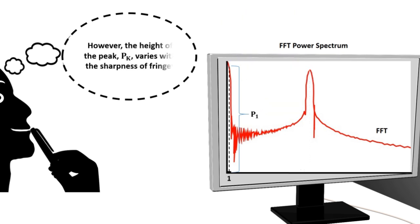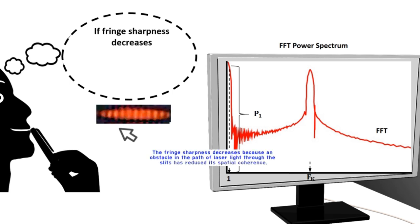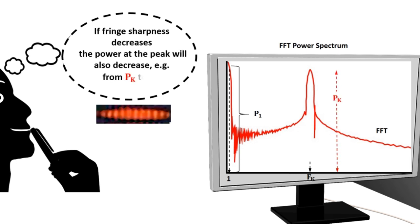However, the height pk of the peak varies with the sharpness of the fringes. If the fringe sharpness decreases, then the power at the peak will decrease from pk to pk prime.